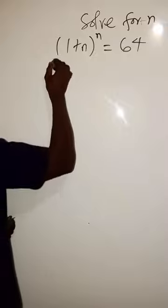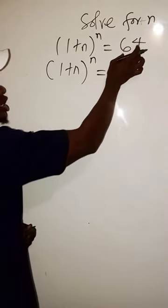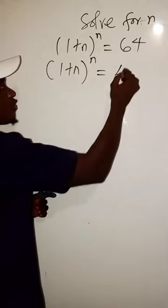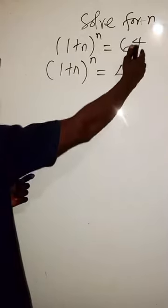Let's see what we are going to do. We have 1 plus n to power n equals, now this 64 can be expressed as 4 to power 3. When 4 is multiplied by itself three times we're going to have 64.